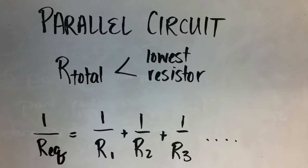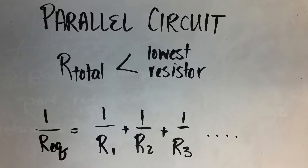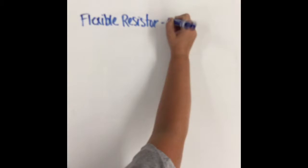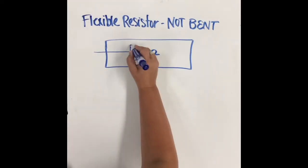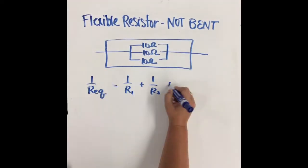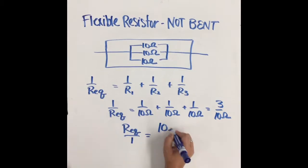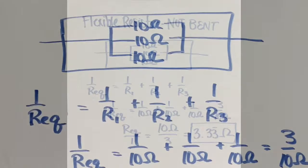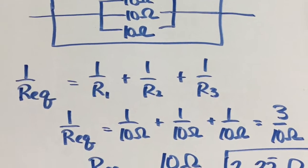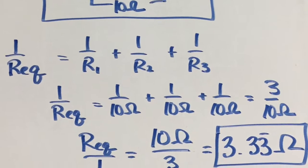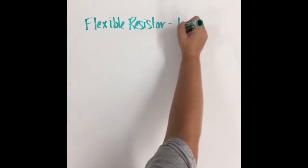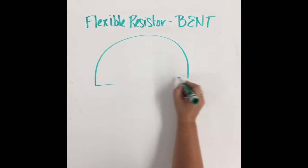Let's assume that our flat resistor acts as though there are three resistors in parallel. For simplicity, we'll assume a resistance of 10 ohms on each branch. This would make our equivalent resistance when the resistor is flat 3.33 ohms.